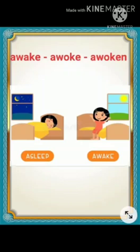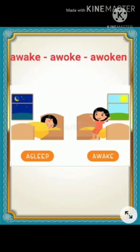Now I will explain the forms of the verb. First one is 'awake, awoke, awoken.' Awake means to wake up from sleep. When you open your eyes in the morning after a good sleep, that is awake. In the picture, one girl is sleeping and one is awake — awake means wake up from sleep.